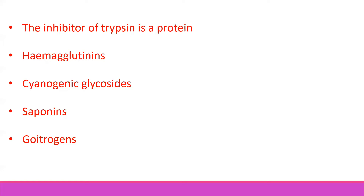Cyanogenic glycosides are present in seeds and they cause cyanide poisoning. On hydrolysis of the glycosides by the enzyme glucosidase, hydrogen cyanide is liberated, and this has a poisoning effect. However, a cyanide content in the range of 10 to 20 mg per 100 g of pulse is considered safe.